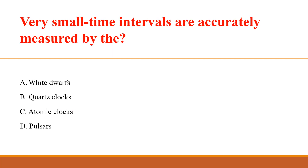Very small time intervals are accurately measured by? Answer: C. Atomic clocks.